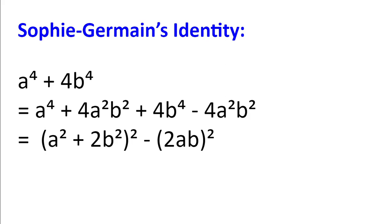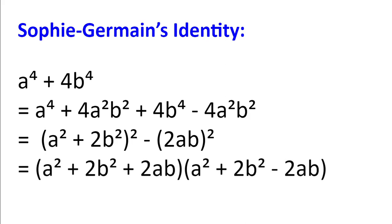Now, here we see a difference of two squares. And so, we can rewrite this as a squared plus 2b squared plus 2ab multiplied by a squared plus 2b squared minus 2ab.